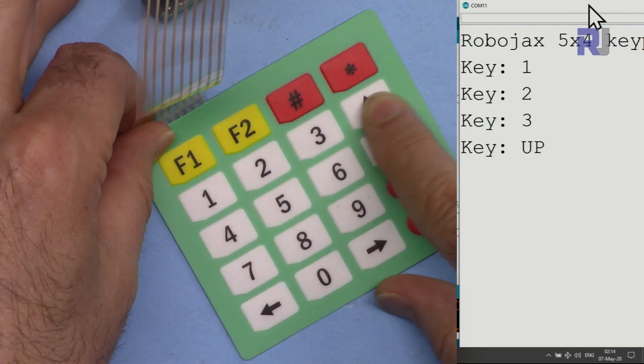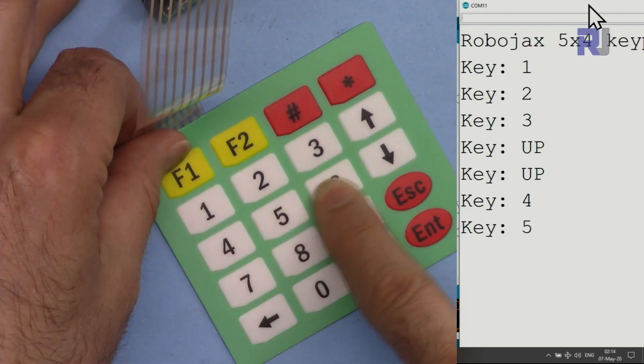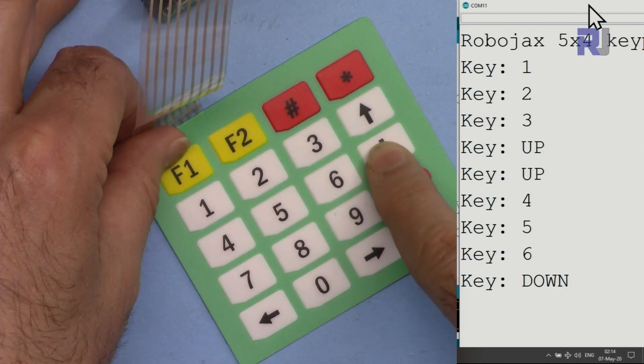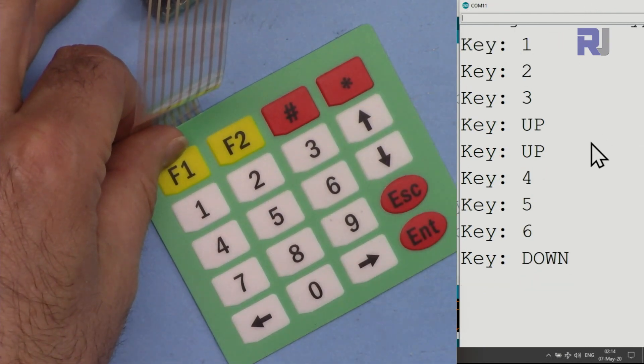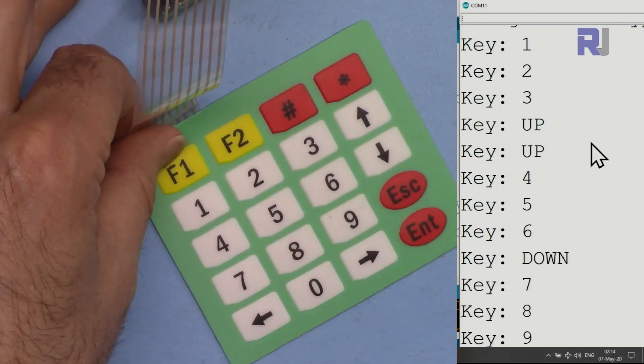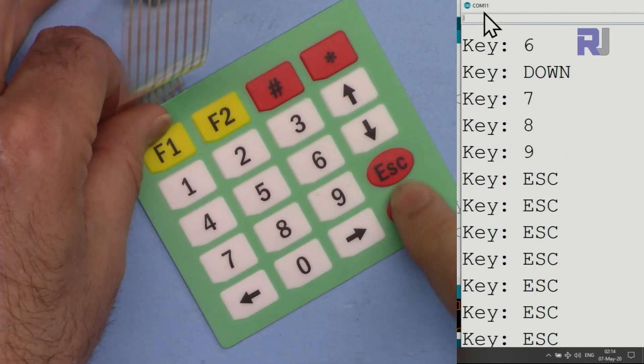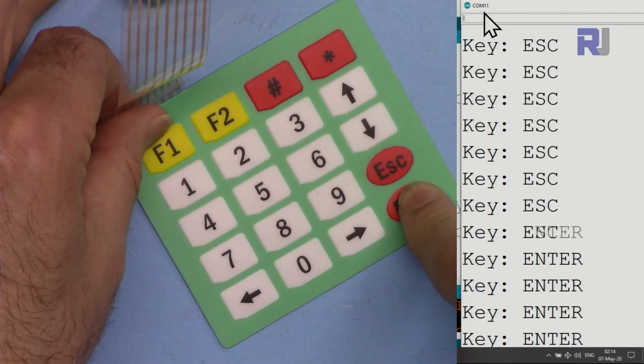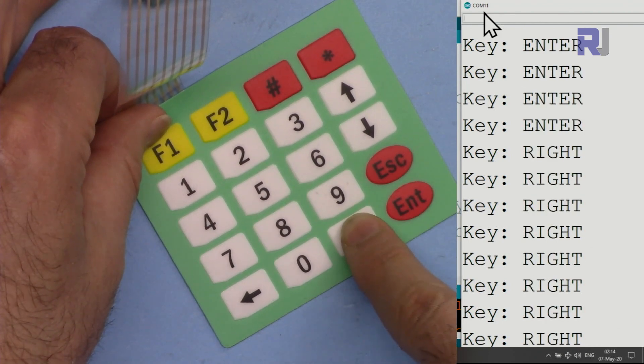Four, up, sorry, and then 4, 5, 6, and when I press this it is printing down. So 7, 8, 9, and then this will print escape multiple times, you will see escape, and then enter, right here, and then left.